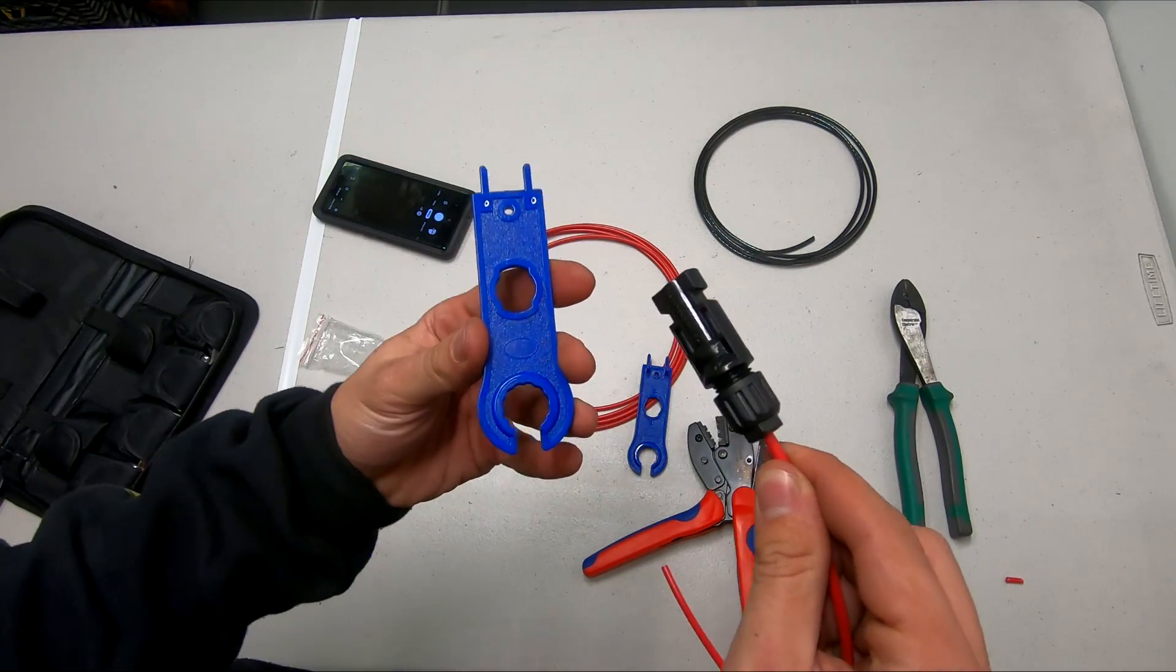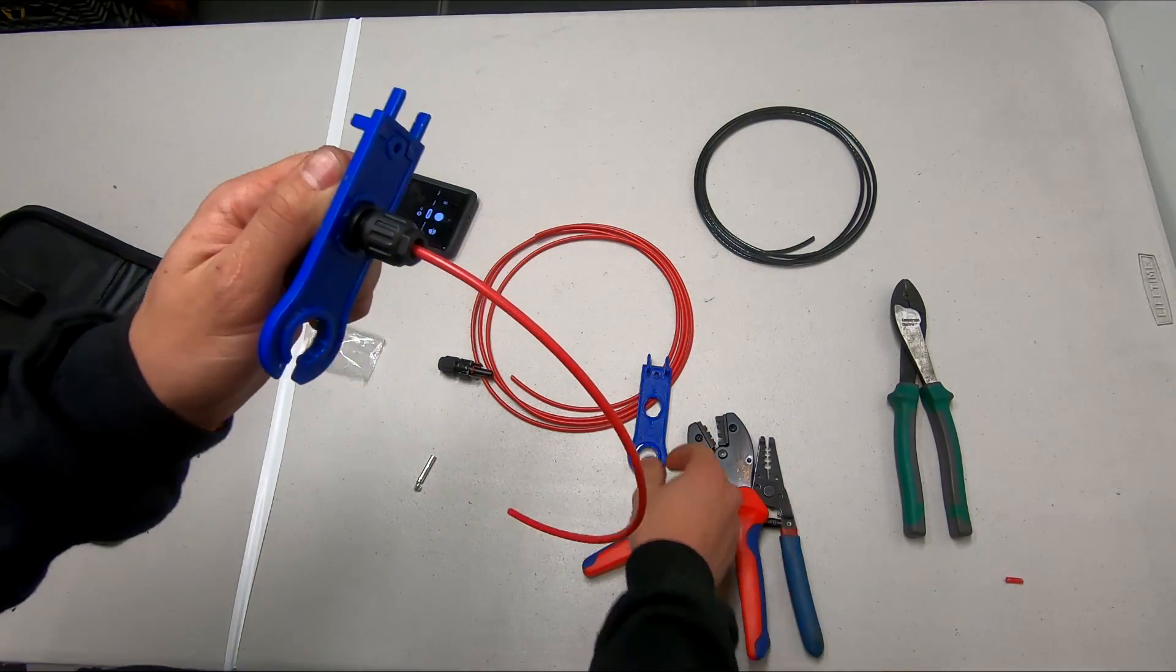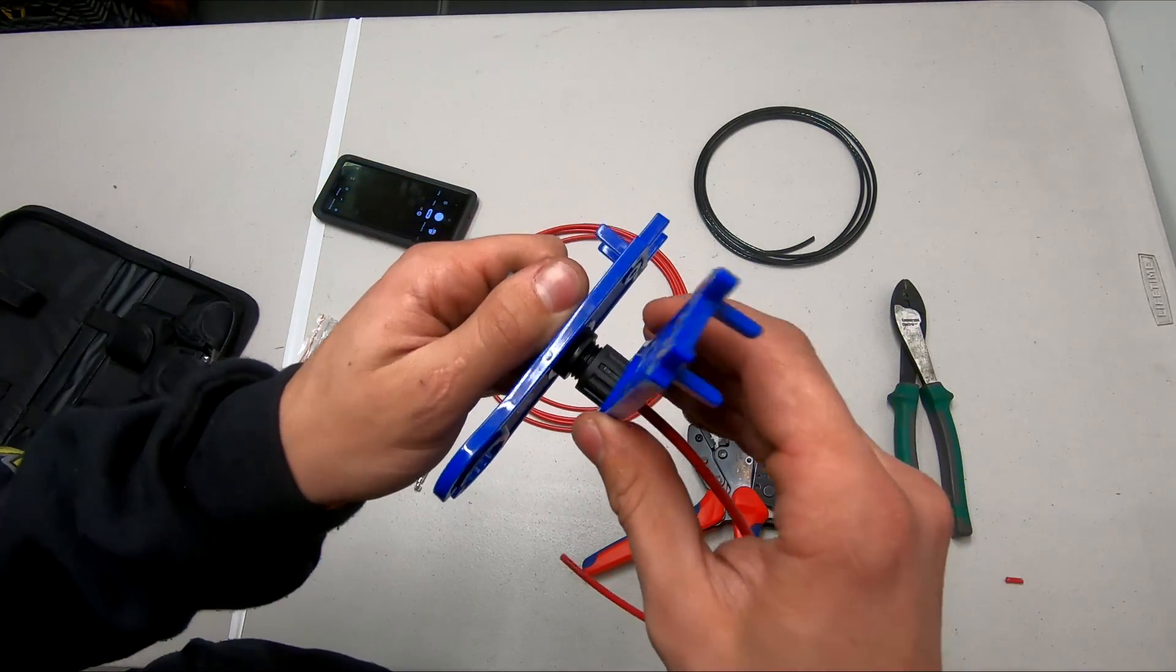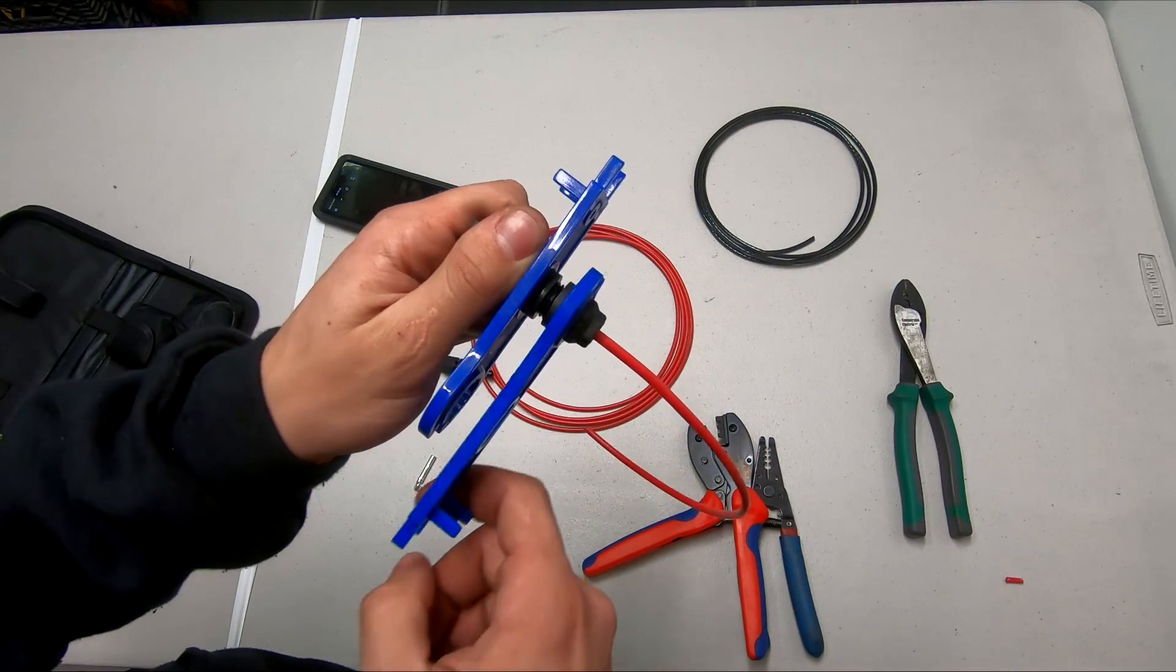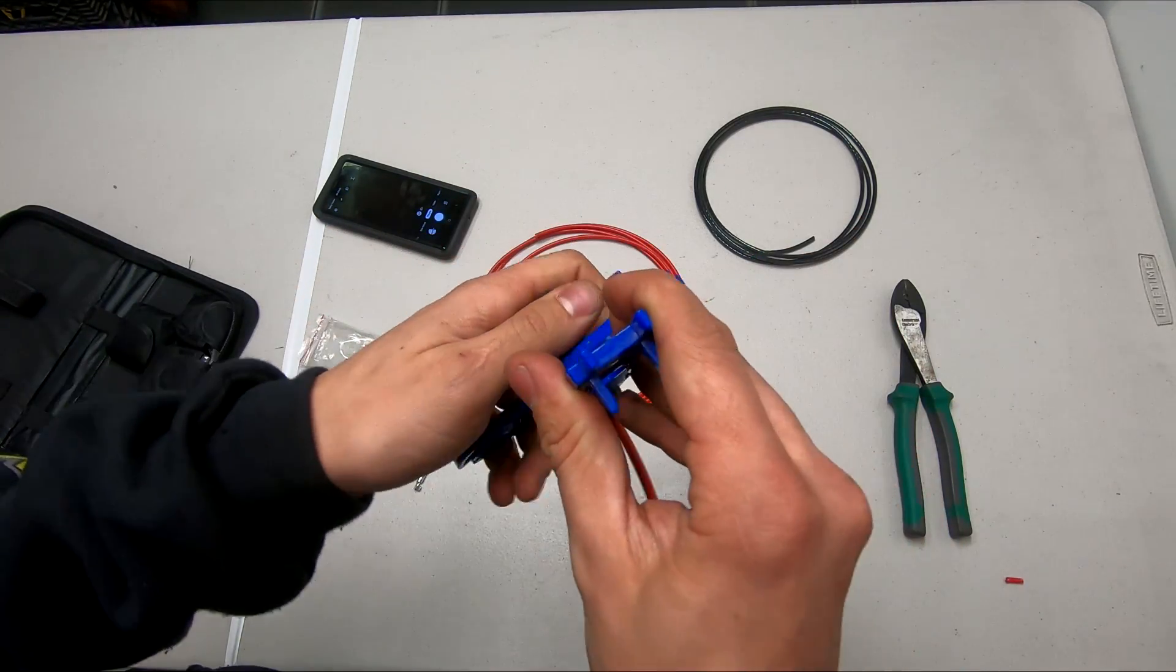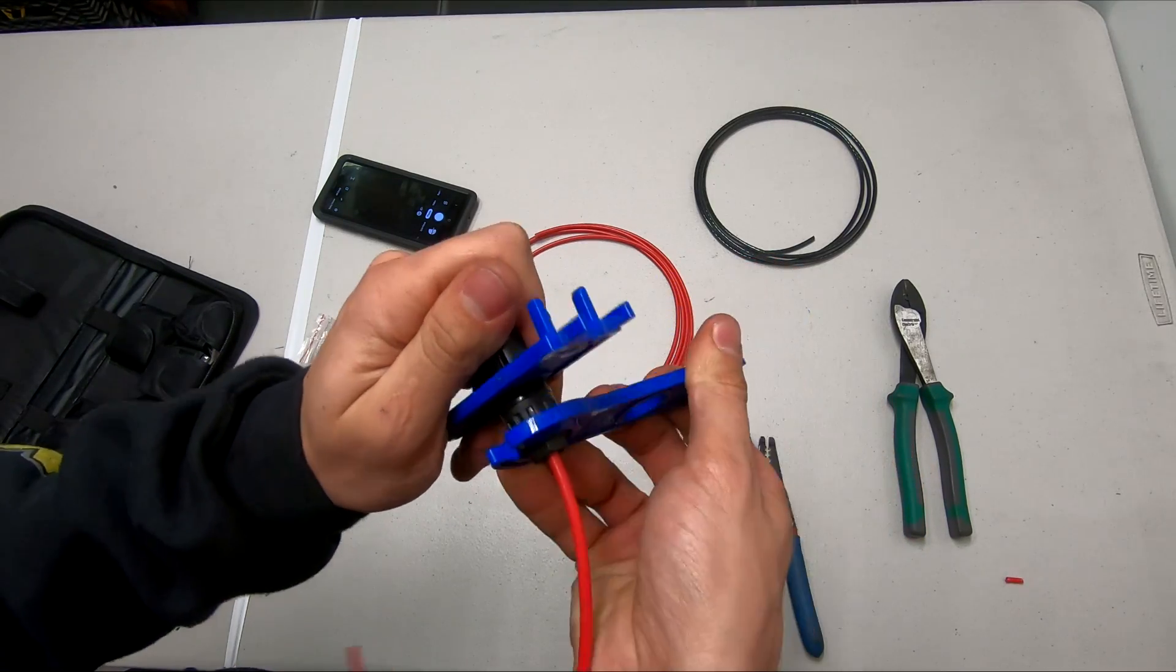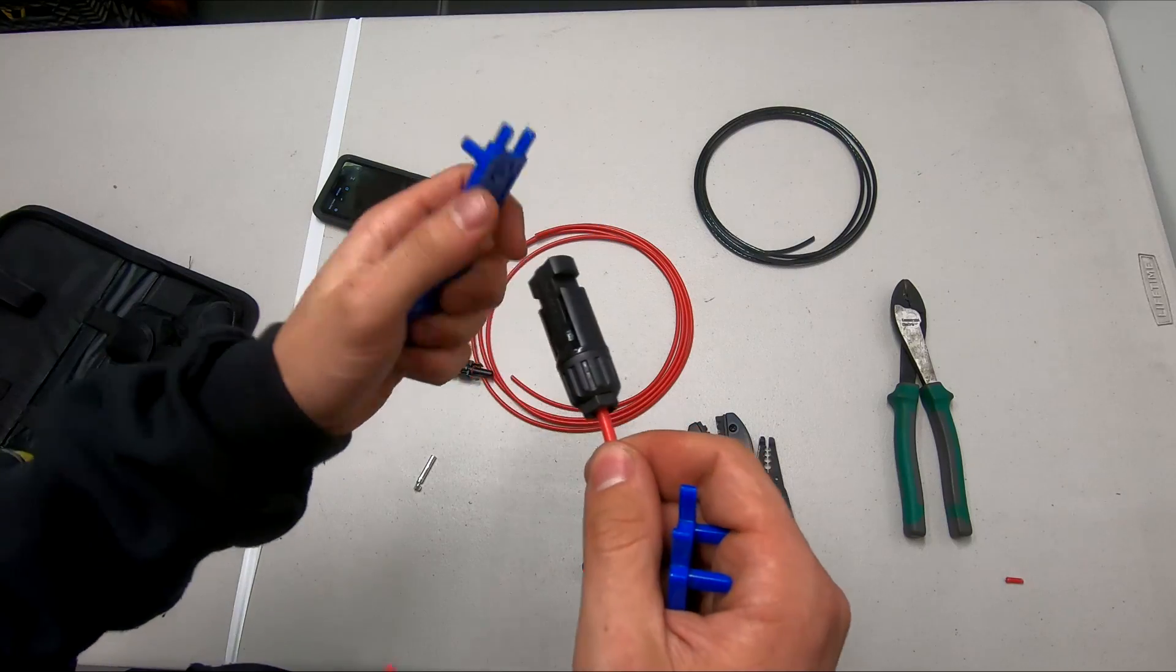You're then going to take your tightening tools that are also part of the kit and put one end over the connector. Take the other tool and go over the back, and tighten it all the way until this tool clicks. Hear it clicking? That's how you know it's tight enough.